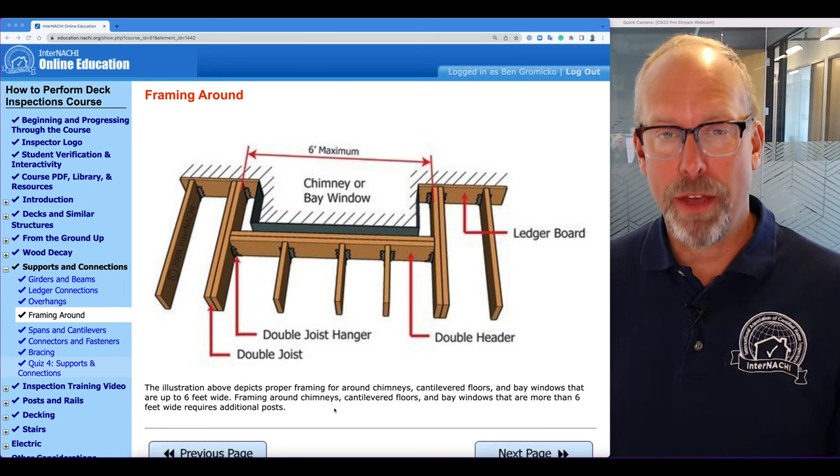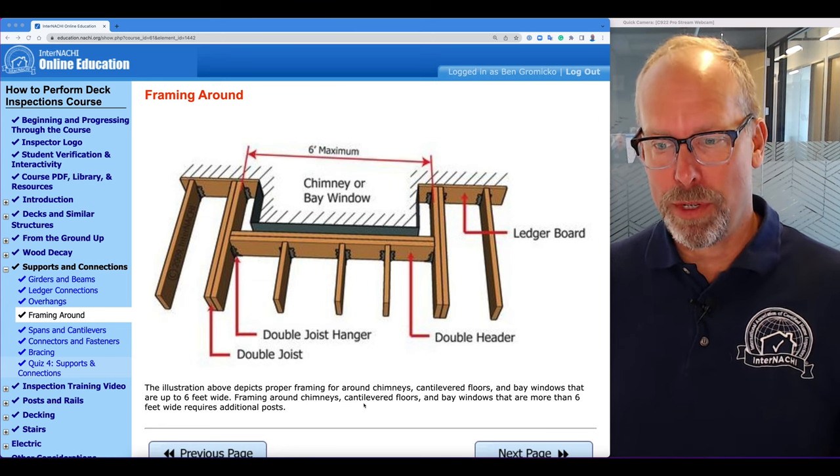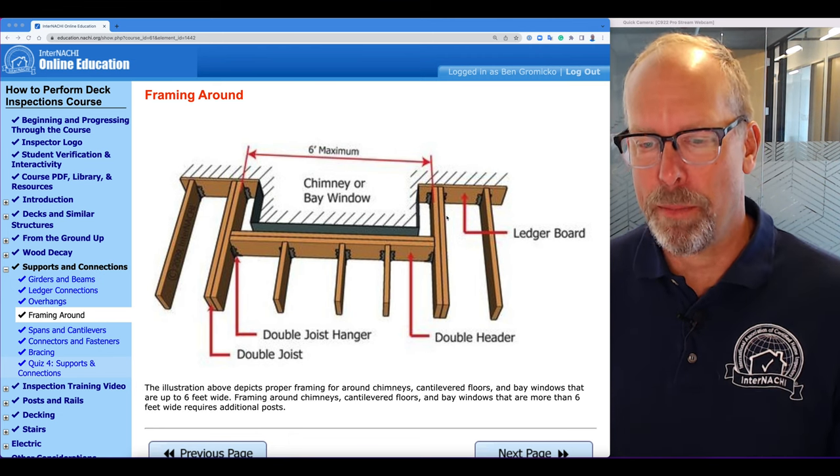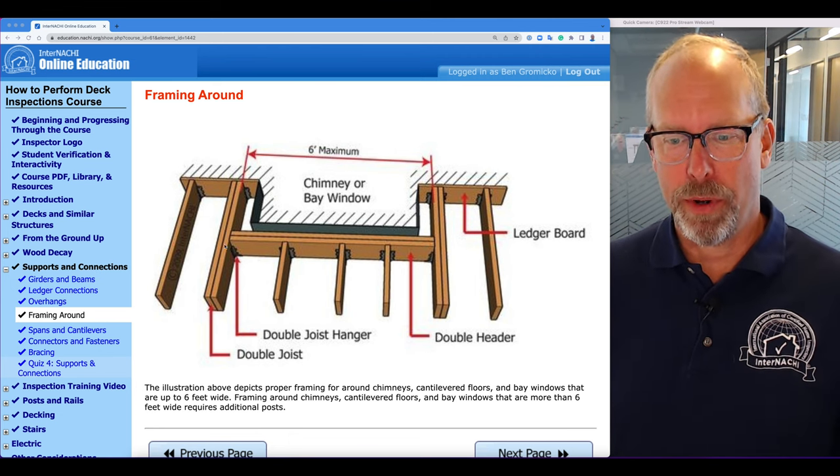The framing around these structures—chimneys, cantilevered floors, and bay windows that are more than six feet wide—should have some posts to support this band.